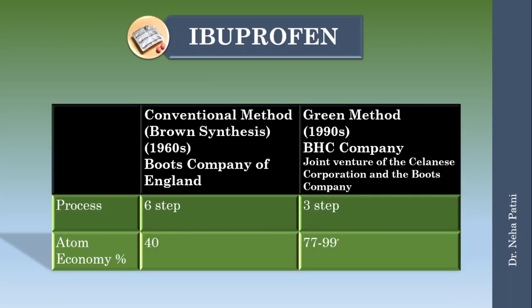Green principle focuses on formation of desired product and that is what atom economy is. This is one case study of ibuprofen where this particular principle is followed. The conventional method known as brown synthesis of ibuprofen was developed in 1960s and Boots Company of England was doing that. The process took six steps to complete and when you calculated the atom economy it was only 40 percent. Later on that BHC company which was actually the joint venture of Celanese and that Boots company itself developed one method which you can consider as green synthesis.